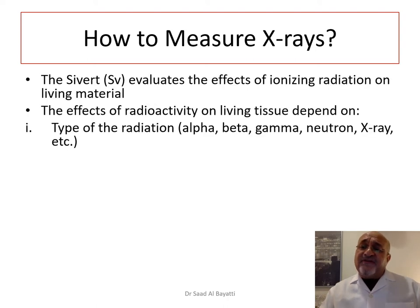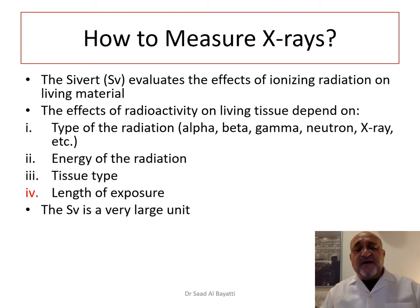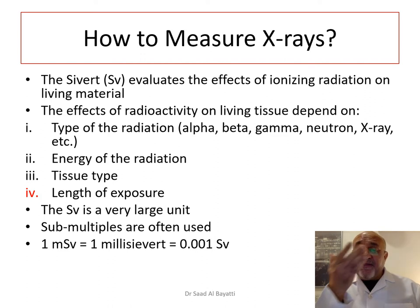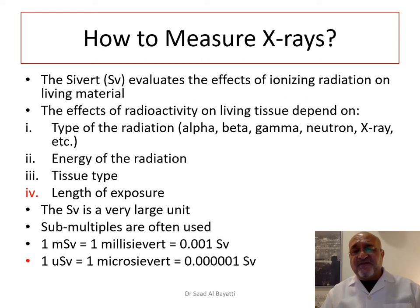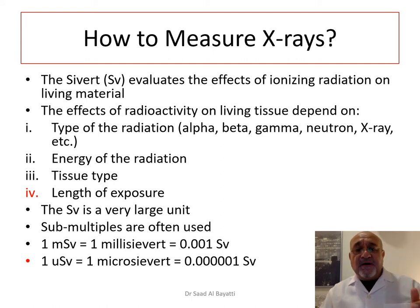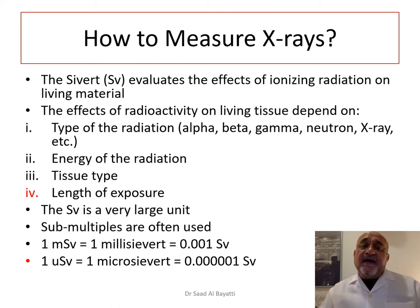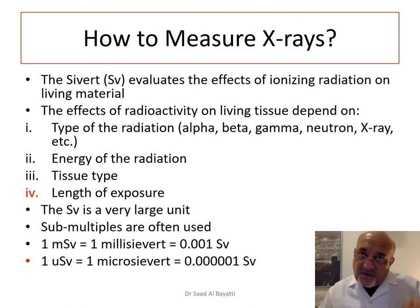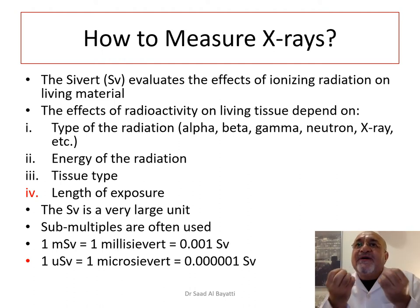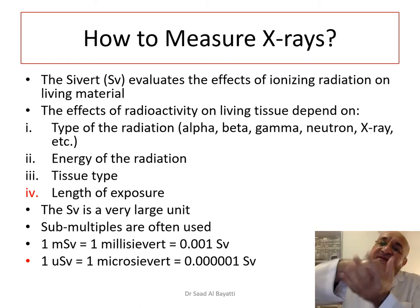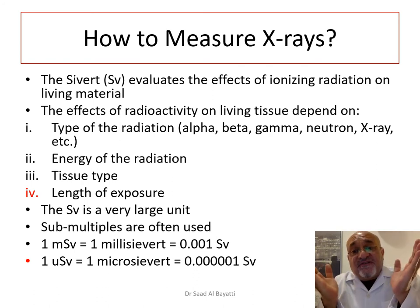Measurement of X-rays: as we have discussed in previous videos, we measure the effective dose and the unit of measurement is the Sievert. The Sievert is actually a very big unit, so it is subdivided into smaller fractions like millisieverts — 1 over 1000 — and microsieverts — 1 over a million of a Sievert. When we measure radiation, we are evaluating the effect of ionizing radiation on living tissue, measuring how much energy is being given into the living tissues. This is affected by many factors.